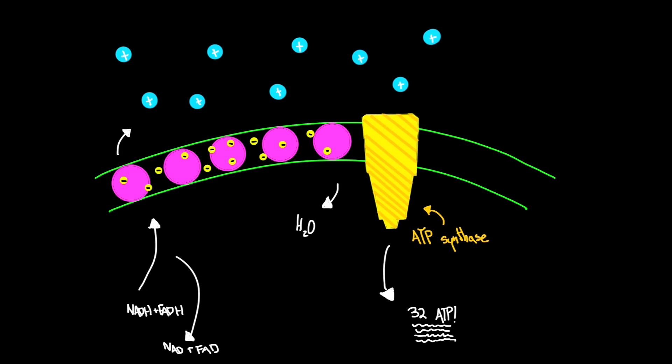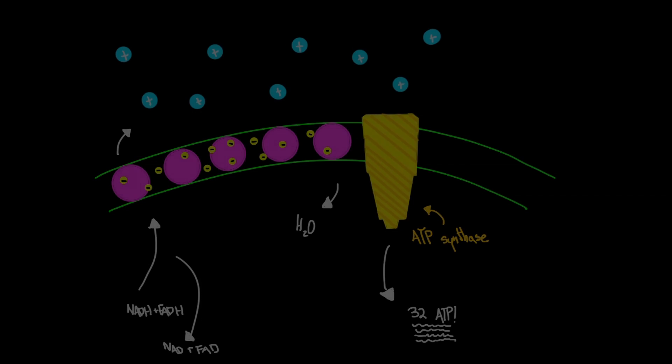So the protons go through ATP synthase, and ATP synthase basically synthesizes them with adenosine diphosphate and creates adenosine triphosphate. The electron transport chain can produce up to 32 ATP molecules just from one original glucose, although it is more common to produce around 29 ATP.